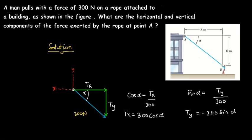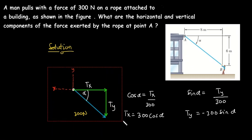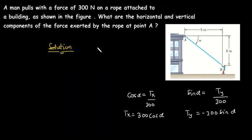So if we find the value of cos α we can find TX, and if we know the value of sin α we can find TY. There are two ways to do this: you can find the value of angle alpha and substitute it, or you can find the magnitude of line AB and use that to solve for TX and TY. We are going to use both methods.